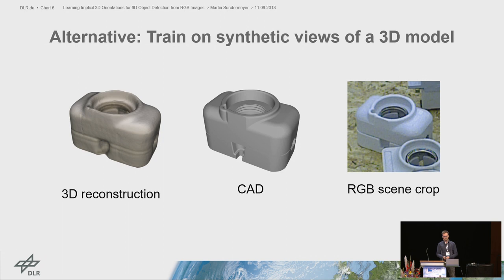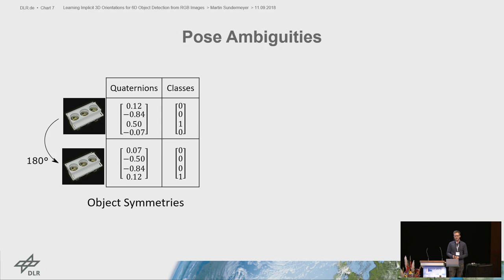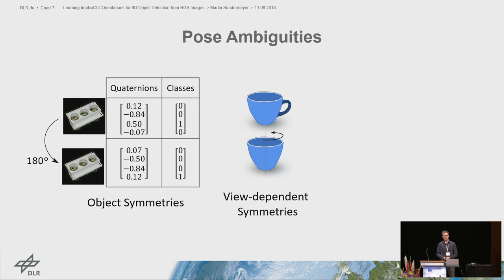Another challenge are pose ambiguities, especially for supervised learning approaches. A symmetric object appears identical from opposite viewpoints, but the labels are completely different. In this case, you can't learn a direct mapping from object views to pose labels, because this is a one-to-many relation. Even if your object is non-symmetric, you can still have view-dependent symmetries, as in the popular CAP example. Finally, there can be occlusion-induced symmetries as well.